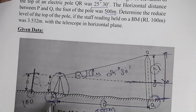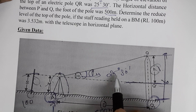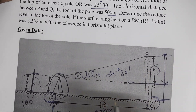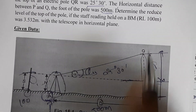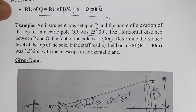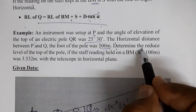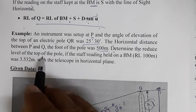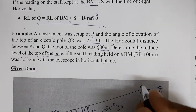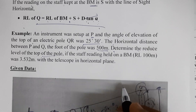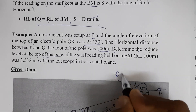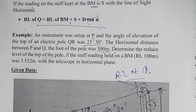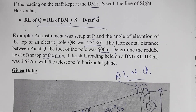When you start solving an example, first you need to draw a rough sketch of the given data. Draw a figure showing P, Q, and the angle. What we need to determine is the reduced level of the top of the pole — that is, the RL of point Q.